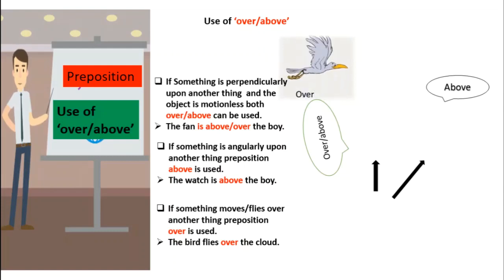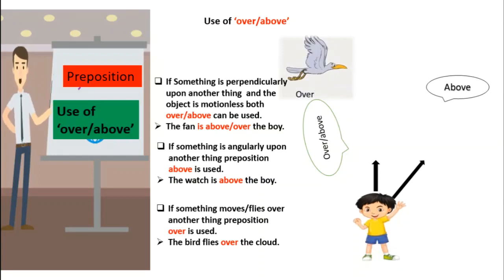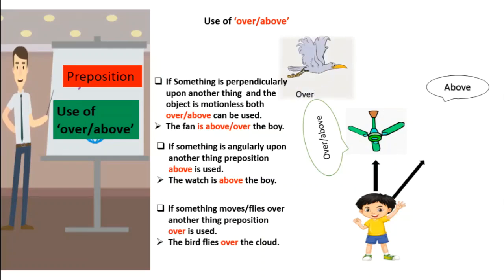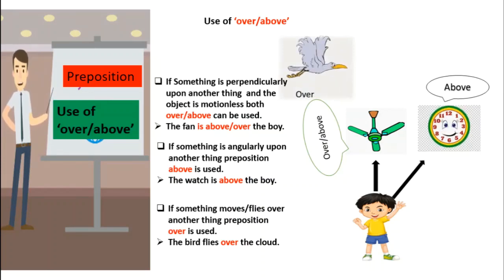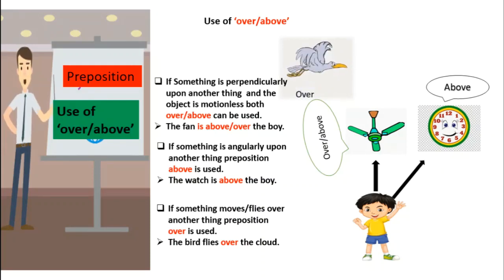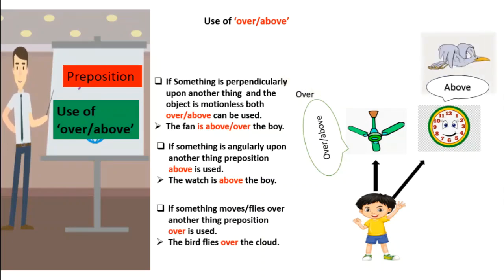Then the use of 'over' and 'above'. If something is directly upon another thing and the object is motionless, like this fan, we can use both 'over' and 'above'. Like, the fan is above or over the boy. But if something is angularly upon another thing, like these words, we use 'above'. If something moves or flies over another thing, 'over' is used. Like, the bird flies over the cloud.